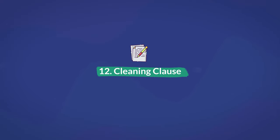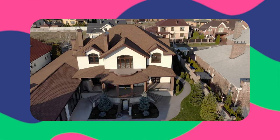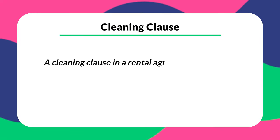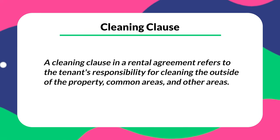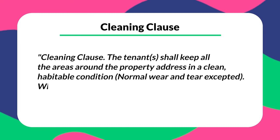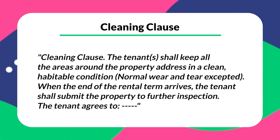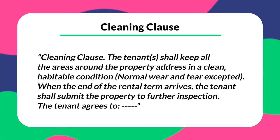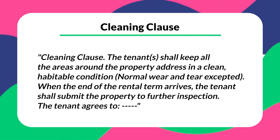Number twelve is a cleaning clause. When it comes to rental property, it's typically expected to be clean at the end of the agreement. Tenants usually need to return the unit in the exact same clean condition it was when they received it. A cleaning clause refers to the tenant's responsibility for cleaning the outside of the property, common areas, and other areas. If the tenant fails to keep the property clean when the agreement ends, a cleaning clause may result in a deduction from the security deposit or additional rent payments. The clause may be written as: 'The tenant shall keep all areas around the property in a clean, habitable condition. Normal wear and tear expected. When the end of the rental term arrives, the tenant shall submit the property to further inspection.'